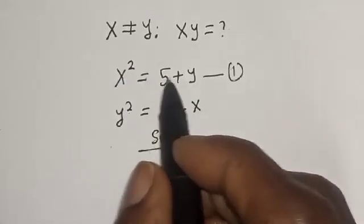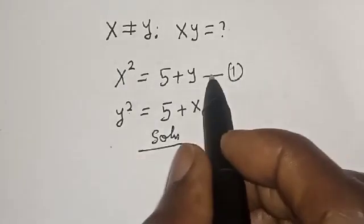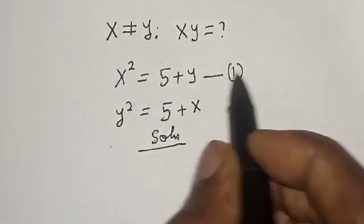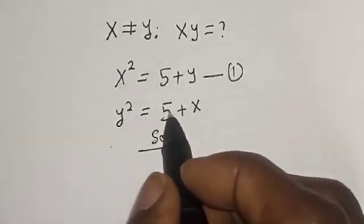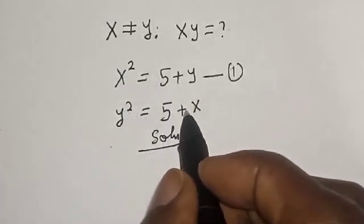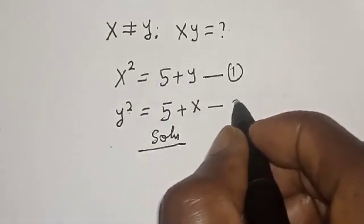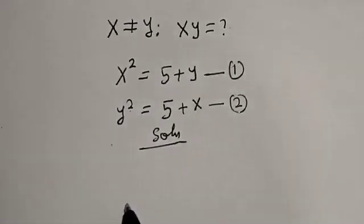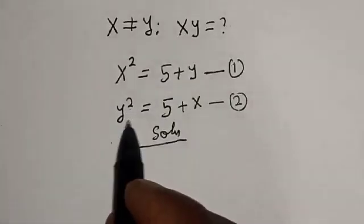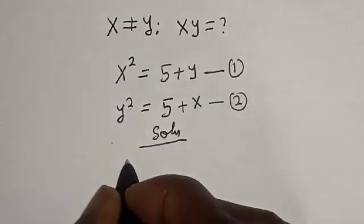x squared is equal to 5 plus y — let's call this equation 1. y squared is equal to 5 plus x — let's call this equation 2. Now, let's subtract equation 1 from equation 2.